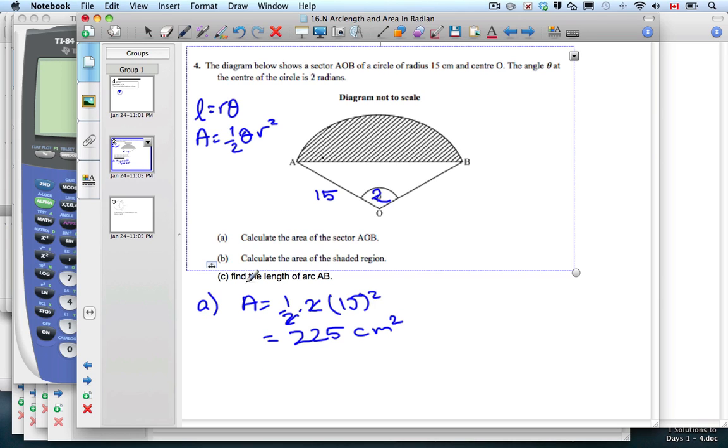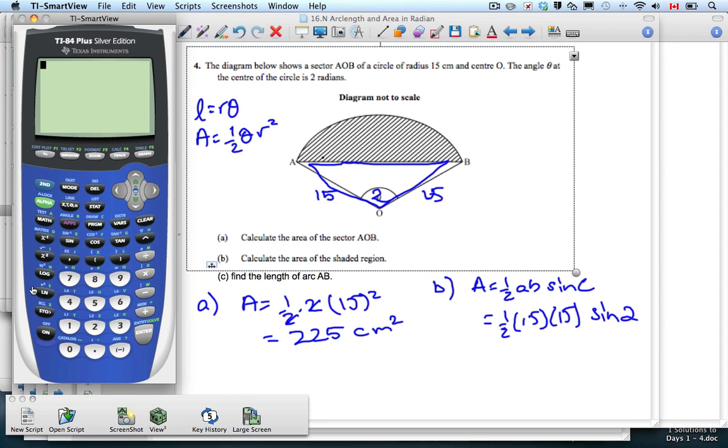Next part, area of the shaded region. In order to get the area of the shaded region, I have the whole region. If I could find the area of the triangle and subtract the triangle from the whole thing, I'm left with the shaded. The formula for that is area equals one half A B sine of C. Now this is where we need our calculator.